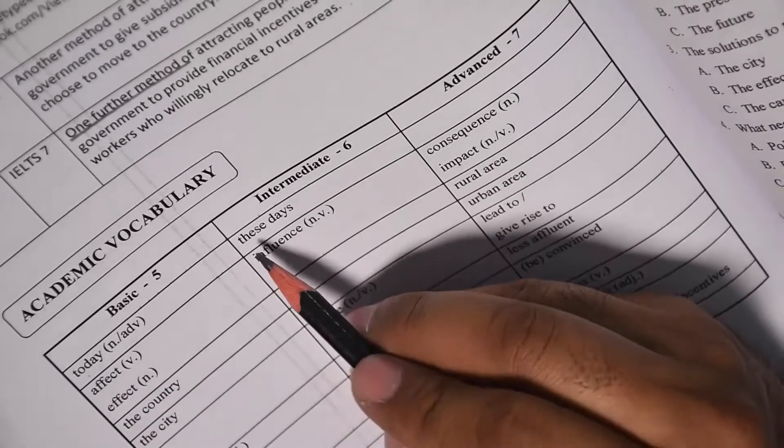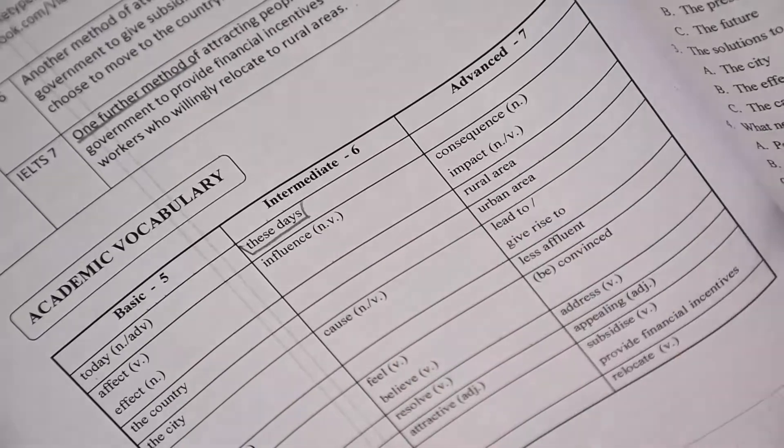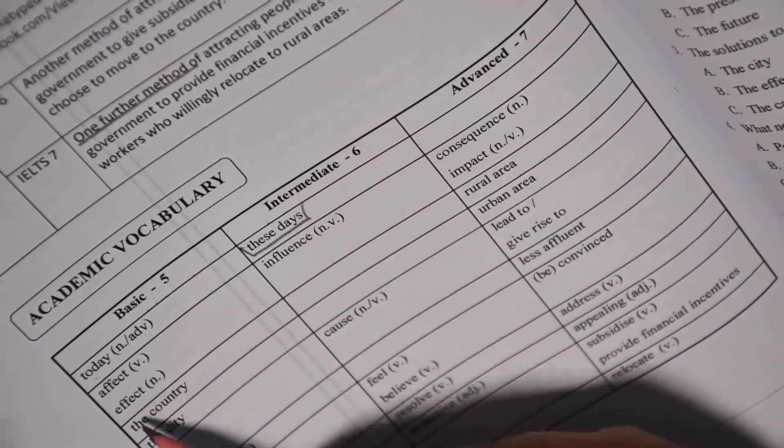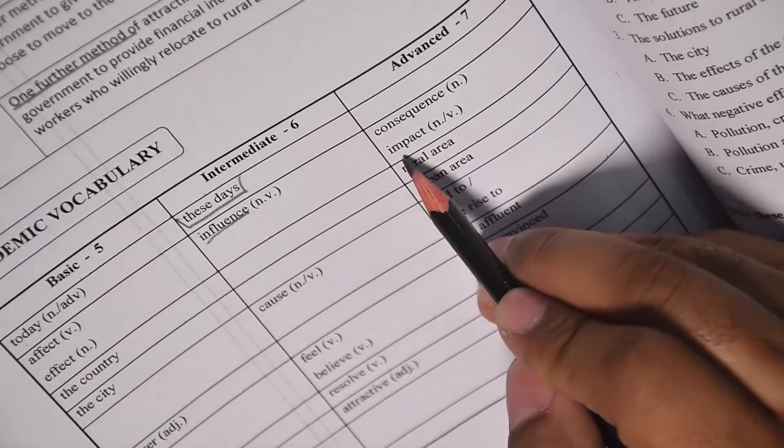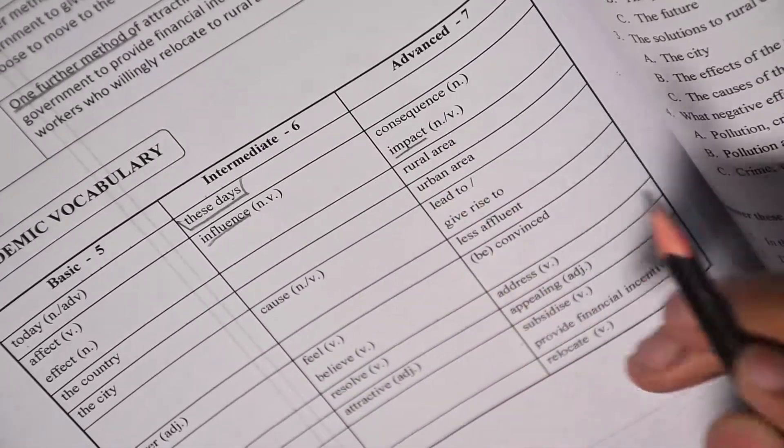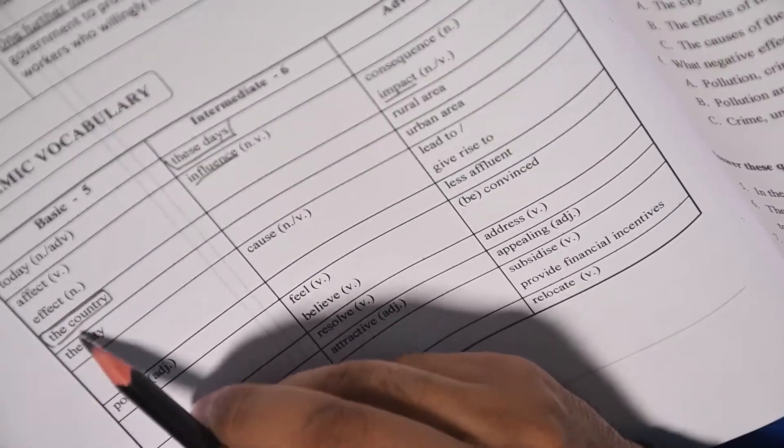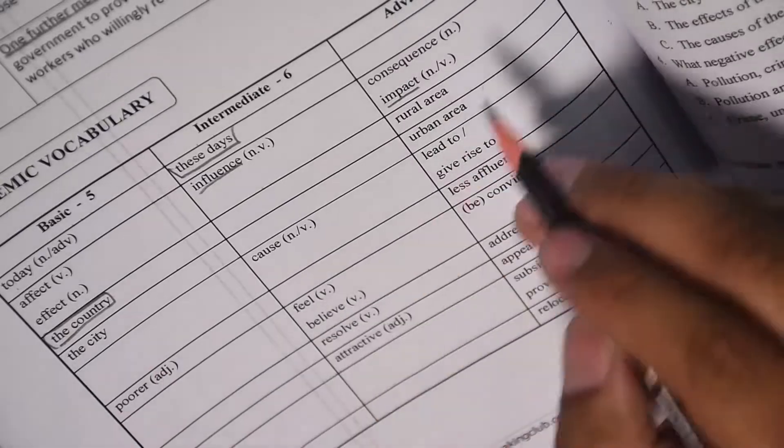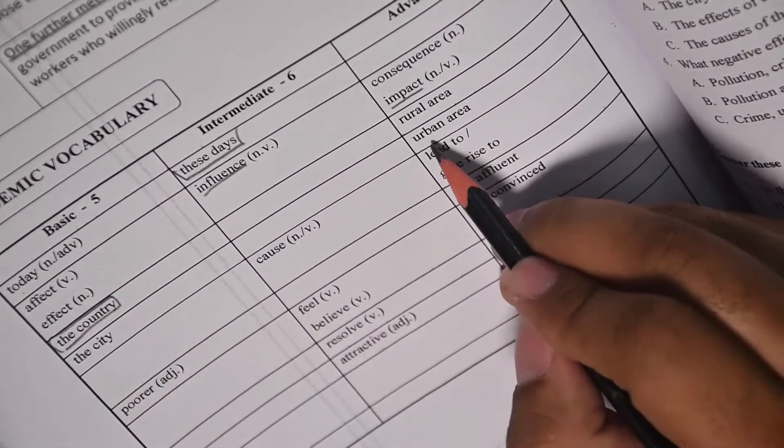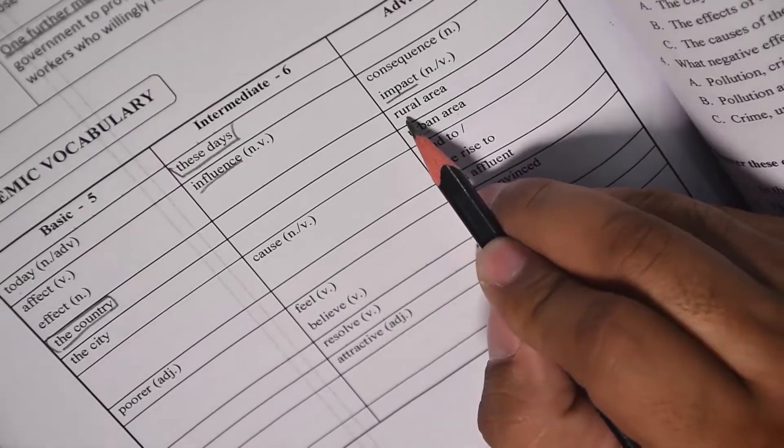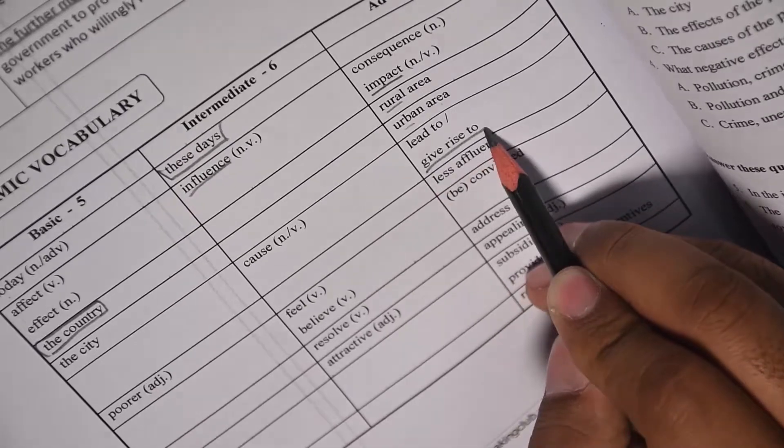Today is basic, it should be these days. These days is fine, nowadays is fine. Effect, instead of that you can write influence or consequence or impact, impact is the best word. For country, country is basic and in this essay they use the word country at many places, so you can write rural area. Opposite for city is urban area. Urban is city, rural is country or village.